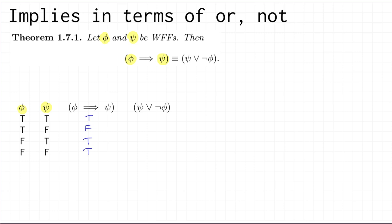The interesting part is working out the truth values for psi or NOT phi. Let's begin with the first row. This is talking about truth assignments which make psi and phi both true. So the truth value here is: true OR NOT true, which is true OR false, and of course by the truth table for OR that is true.